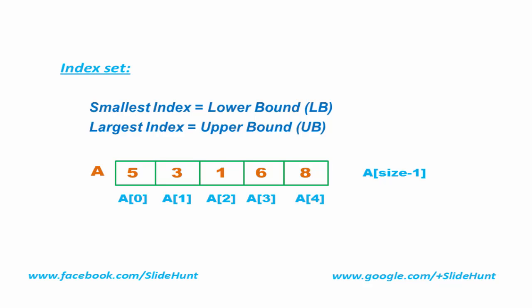For this case, size is 5, so the last element is denoted by a[4]. The values are: a[0] = 5, a[1] = 3, a[2] = 1, a[3] = 6, and a[4] = 8.